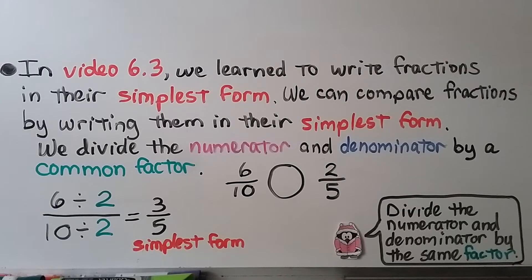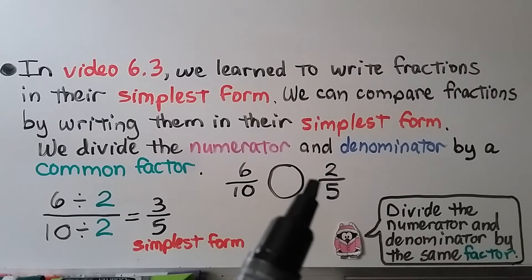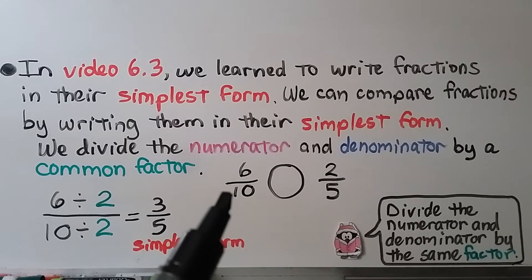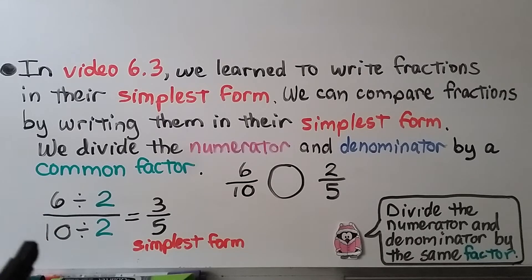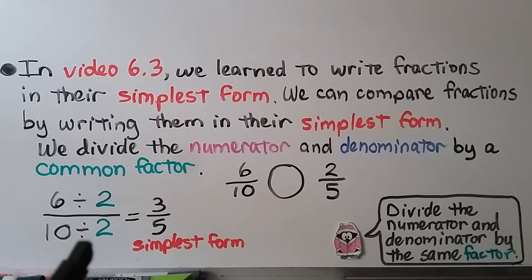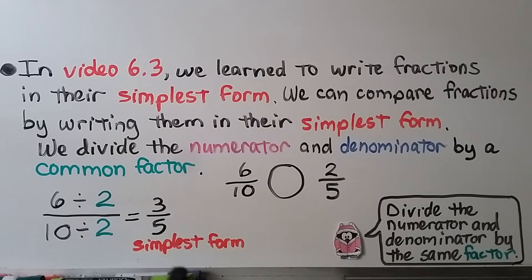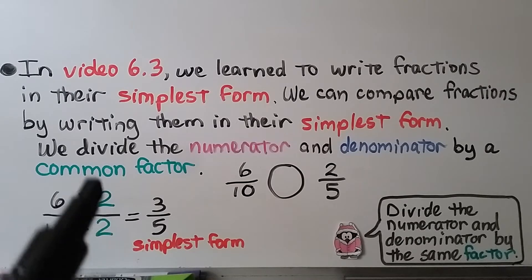In video 6.3, which is linked in the description, we learn to write fractions in their simplest form. We can compare fractions by writing them in their simplest form — we divide the numerator and denominator by a common factor. We have six-tenths and two-fifths. Six and ten have two as a common factor. We do six divided by two, which is three, and ten divided by two, which is five. Now six-tenths is in its simplest form as three-fifths. We make sure we divide the numerator and denominator by the same factor.